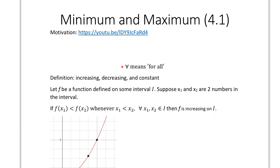We're going to introduce this symbol — it's an upside-down A and it means 'for all.' So here's the definition of an increasing function. Let f(x) be a function defined on some interval I. Let x₁ and x₂ be two numbers in the interval. If f(x₁) < f(x₂) whenever x₁ < x₂, for all x₁ and x₂ in I (where ∈ means 'element of'), then f is increasing on I.